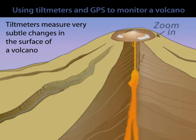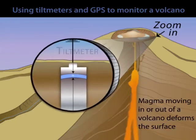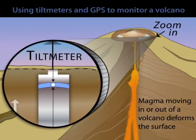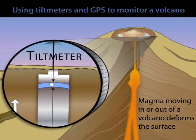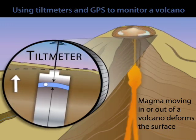One of the instruments we use to measure deformation is a tiltmeter. A tiltmeter measures very subtle changes in the surface of the earth as magma accumulates beneath the station or moves upward, for example.